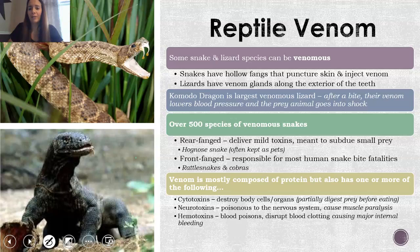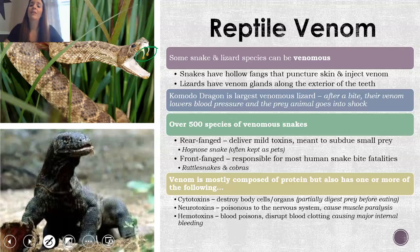Reptile venom is something most people are very interested in, although it's scary if you come across a venomous snake in the wild. Snakes have hollow fangs where the venom comes out, as you can see in that picture. A Komodo dragon is also a venomous lizard, but their venom is a little different — it's in their actual jaws, so it comes out once they bite, rather than through fangs like a snake.